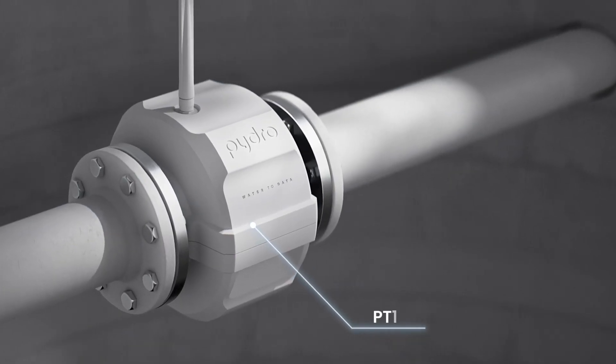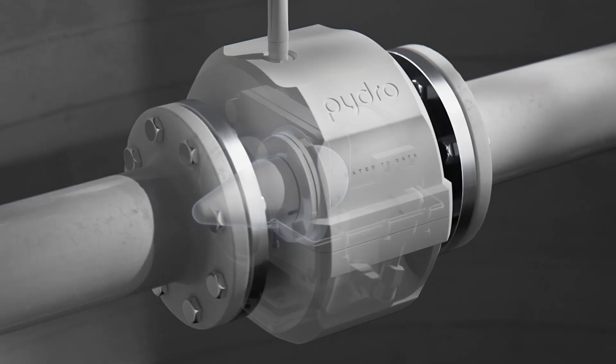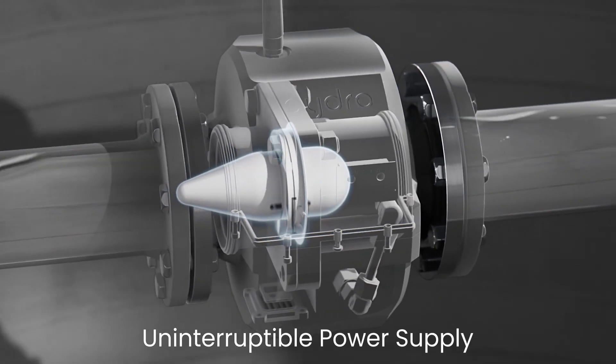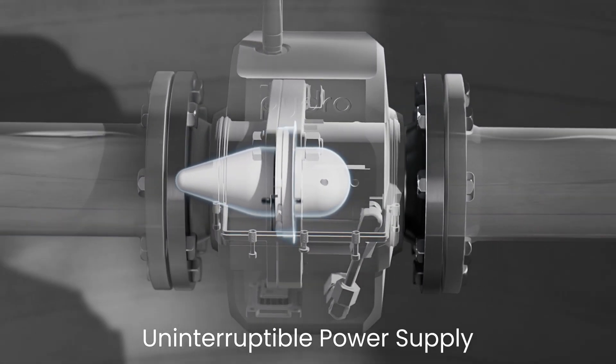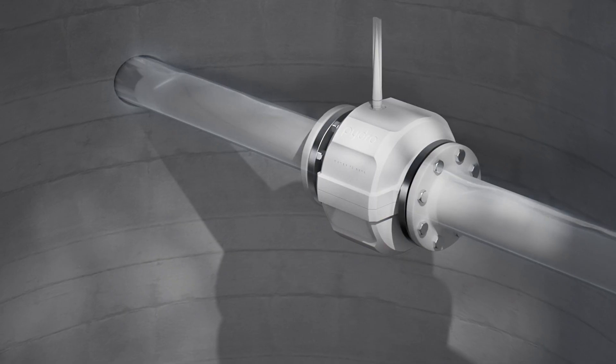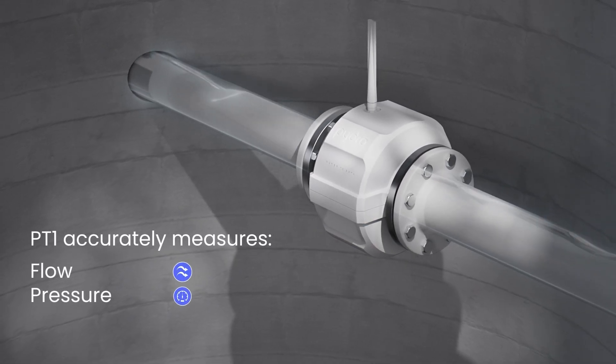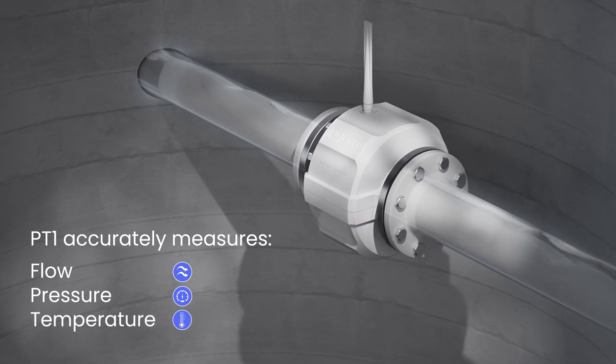Introducing Pydros PT1, the world's first flow meter with a built-in hydropower unit, eliminating the need for external power. Designed for large-scale deployment, it accurately measures flow, pressure, and temperature in real time throughout the network.